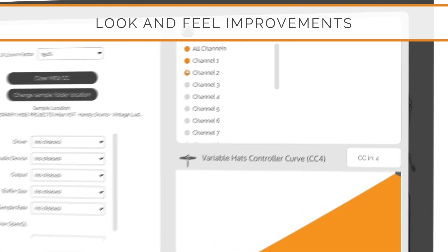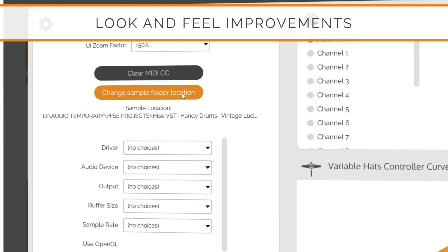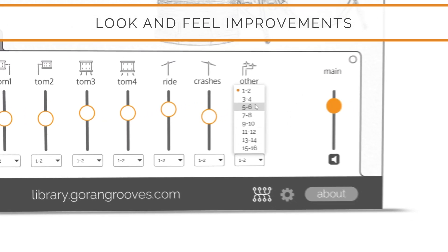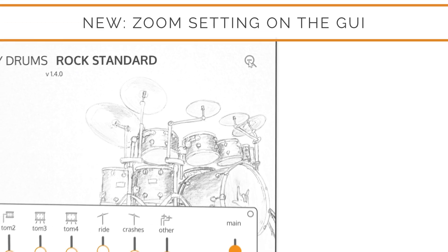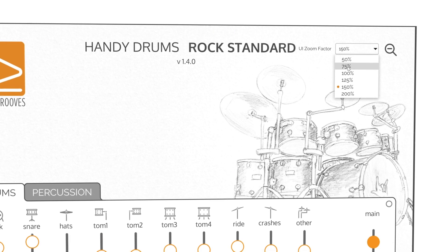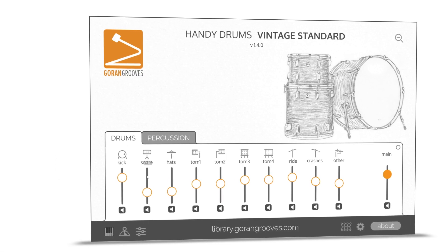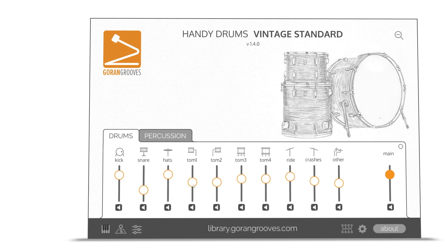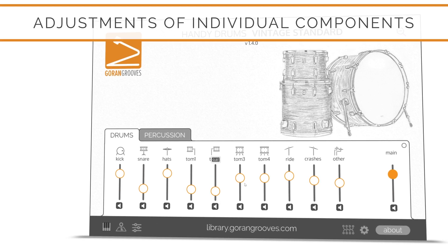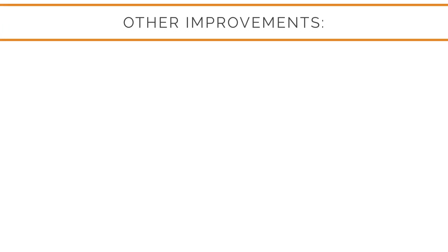We made many tweaks and refinements to various components of our plugin to bring them in line with our design and branding, and we'll continue to polish the details in future updates. We've added a secondary zoom setting to the main GUI, which may come in handy if you launch one of our plugins for the first time on a small screen and find that it doesn't fit. To make all of our virtual drums and percussion more balanced and performance-ready right from the start, we've further tweaked the balances of individual components. We've also done quite a bit of cleaning up, housekeeping, and fixes.